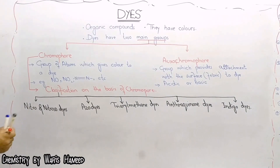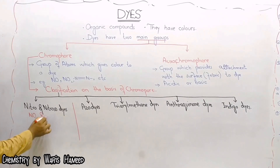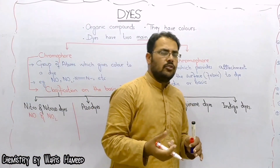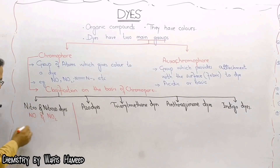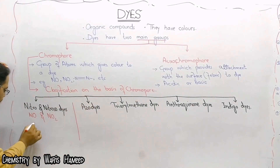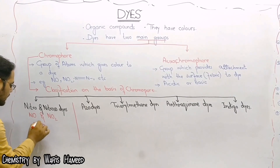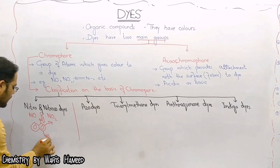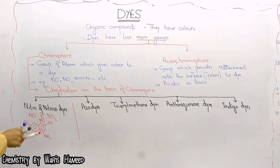In nitro and nitroso dyes, the chromophore group is NO and NO2. NO or NO2 is the chromophore group present in nitro and nitroso dyes. For example, naphthol yellow is an example of nitro and nitroso dyes. Here is the NO2 group, here is the hydroxyl group, here will also be an NO2 group, and here will be SO3.